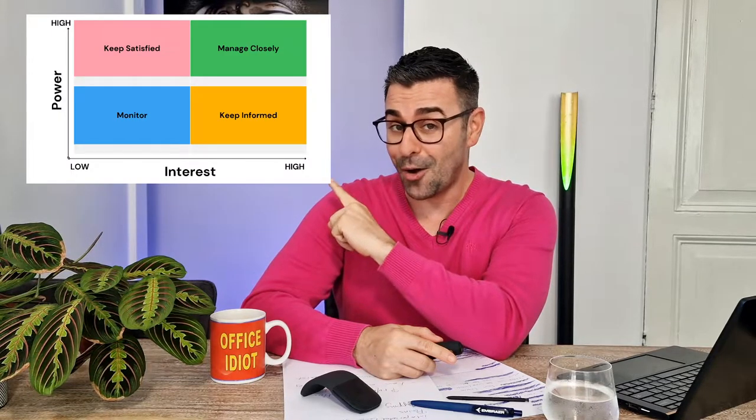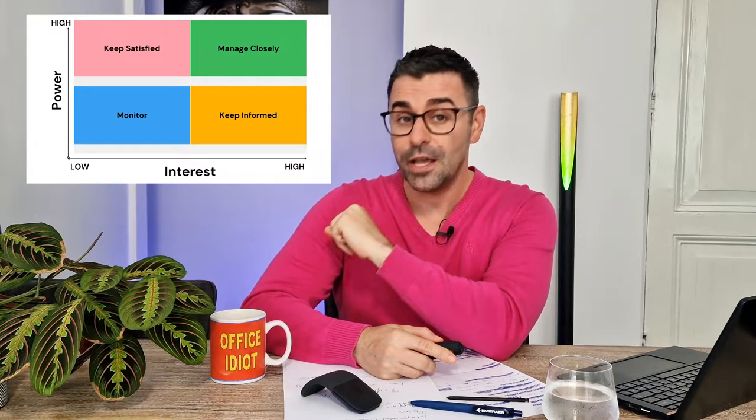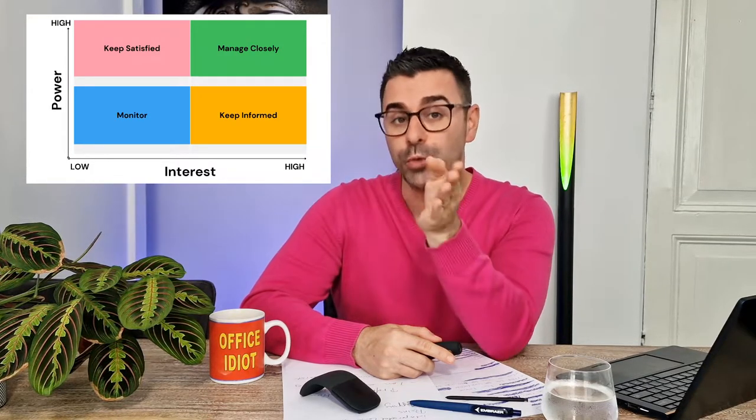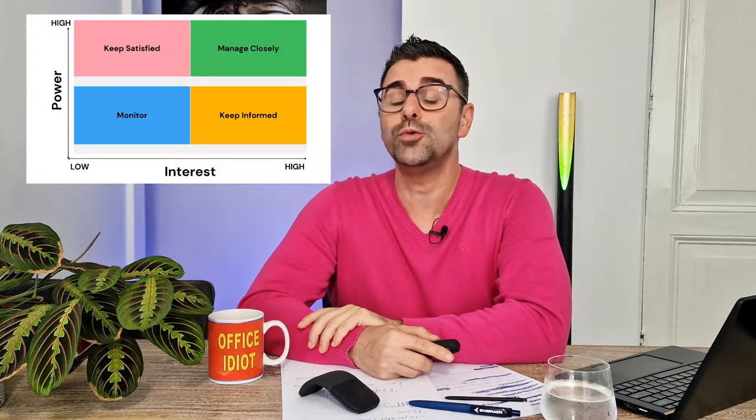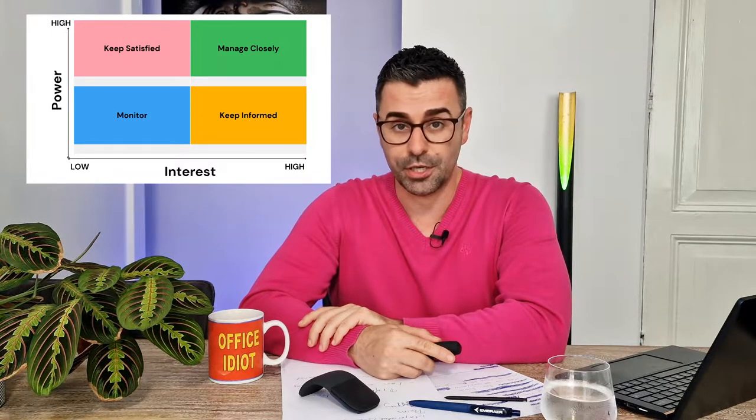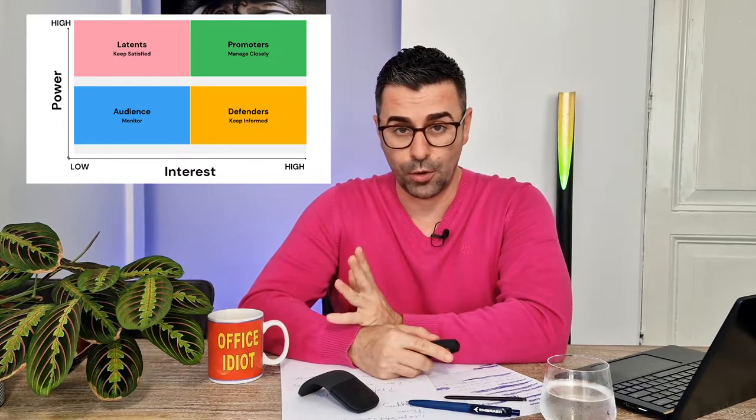By organizing each stakeholder according to their influence or interest, you can determine what actions you need to take, including: who do you need to keep satisfied — high power, low interest; who do you need to manage closely — high power and high interest; who do you need to inform regularly, or as I always call it, 'update me, but do not involve me' — low power, high interest; and who do you need to monitor and anticipate needs — low power, low interest. Basically, we're talking about latents, promoters, defenders, and audience.